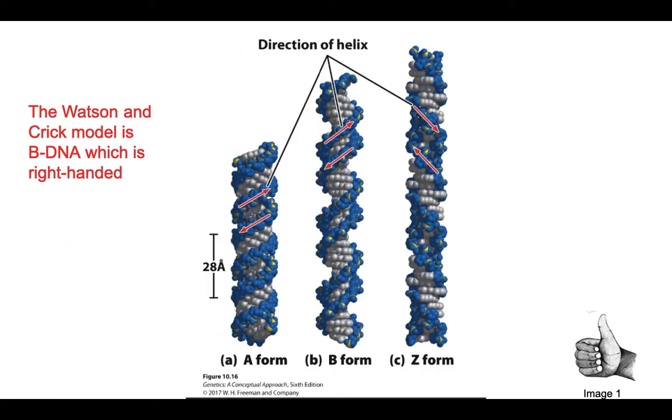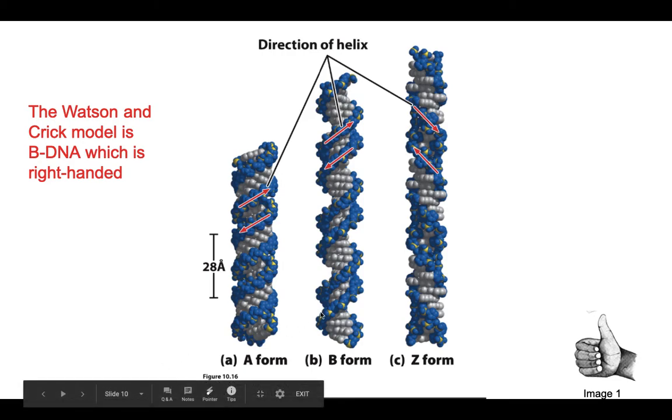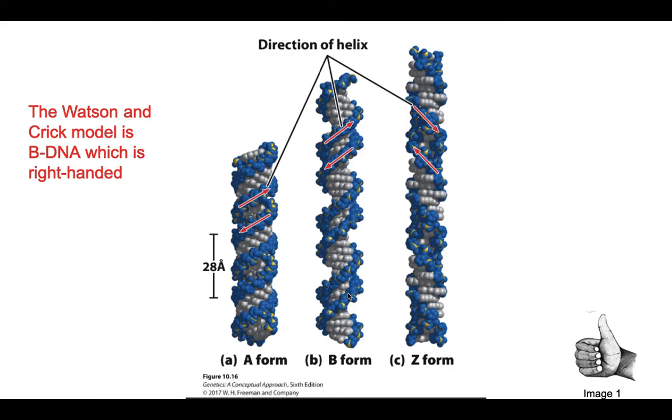The Watson and Crick model is B-DNA, which is right-handed. You can tell it is right-handed because the sugar phosphate backbone closest to you looks like it is climbing up in the right direction. You can also use the fingers of your right hand to see how they curl up in the direction of the backbone.